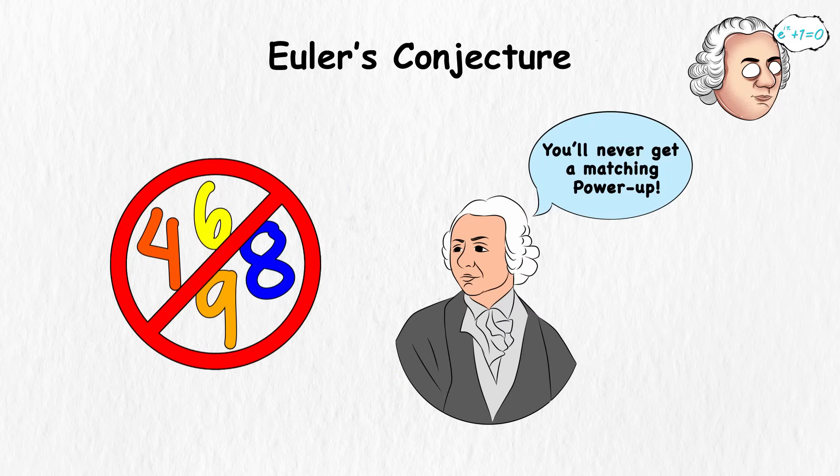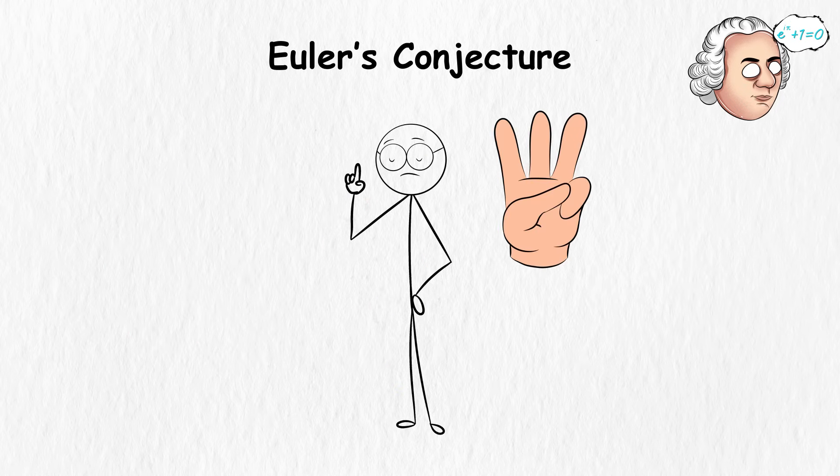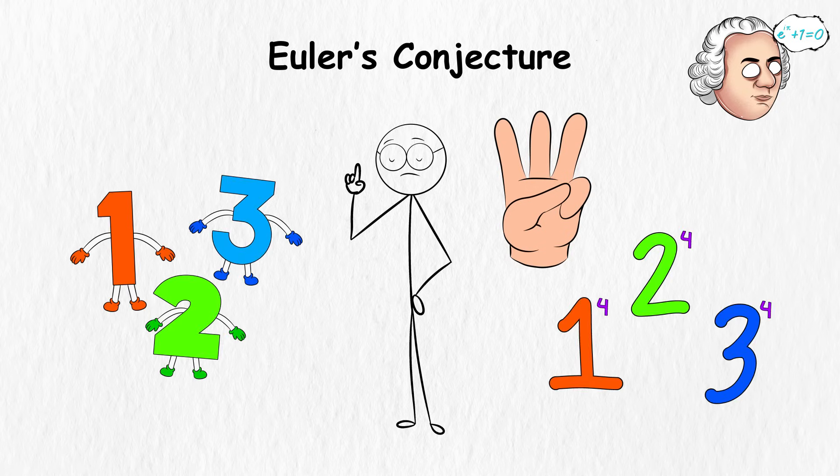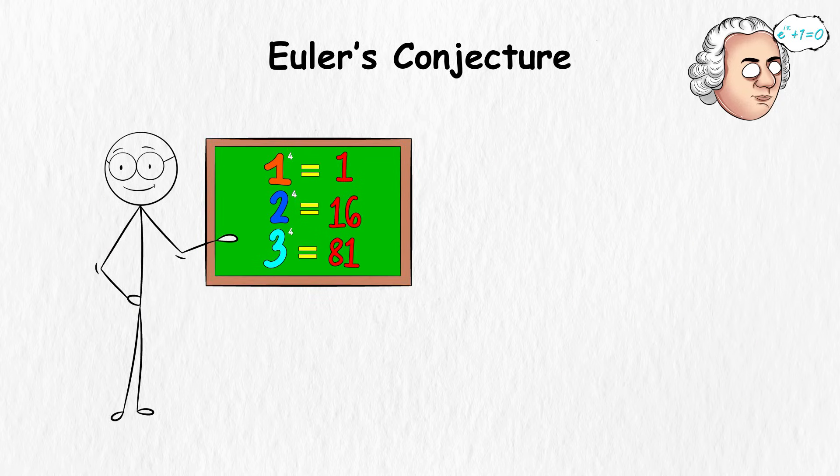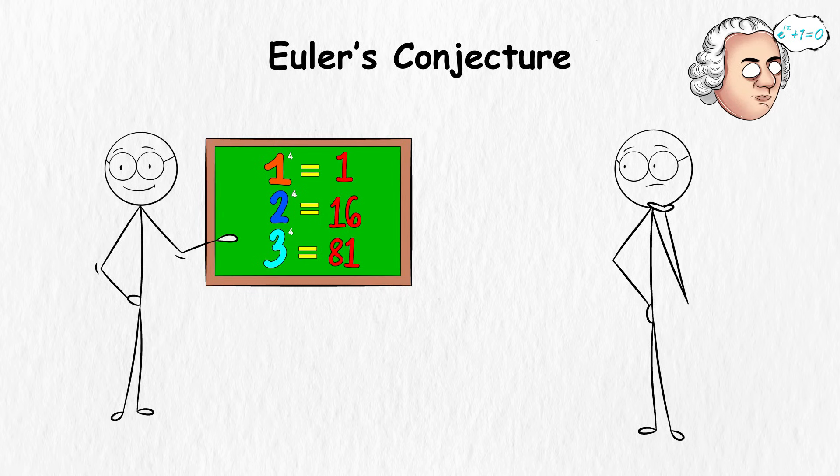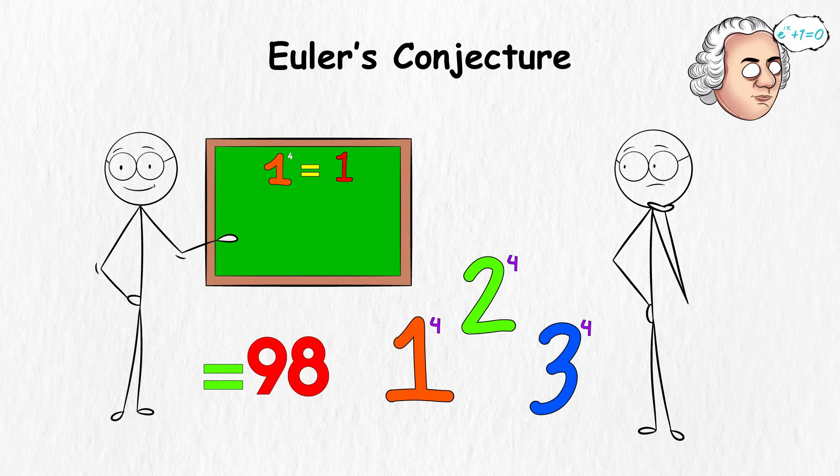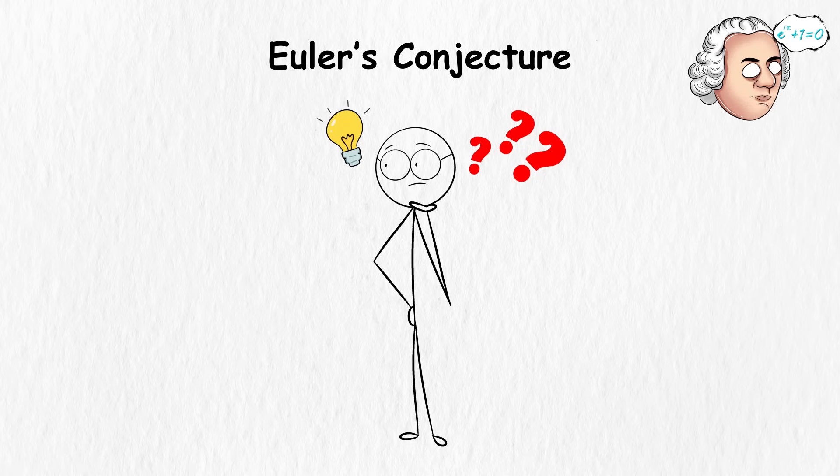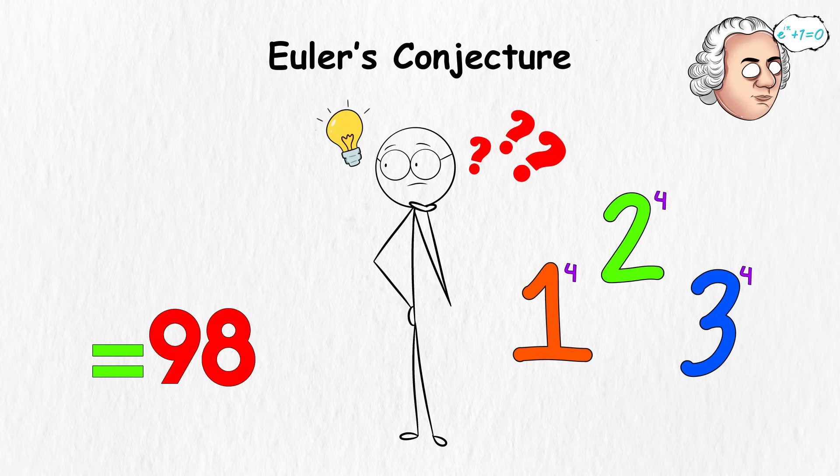For example, if we take three numbers, let's say 1, 2, and 3, and raise them to the power of 4, which means multiplying them by themselves four times, Euler thought there wouldn't be another whole number that, when raised to the power of 4, equals the sum of those three numbers. So let's break it down. 1 raised to the 4th power is 1. 2 raised to the 4th power is 16. 3 raised to the 4th power is 81. Adding these up gives us 1 plus 16 plus 81 equals 98. Euler guessed that there was no whole number that, when raised to the 4th power, would equal 98.